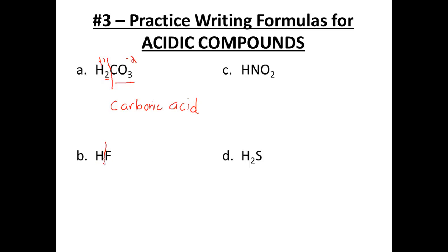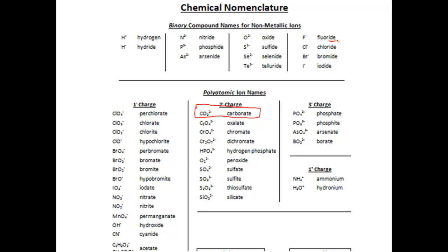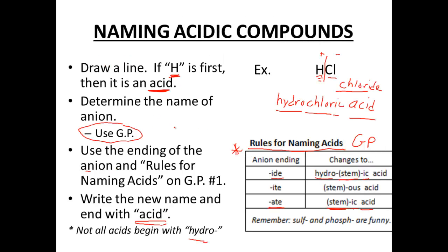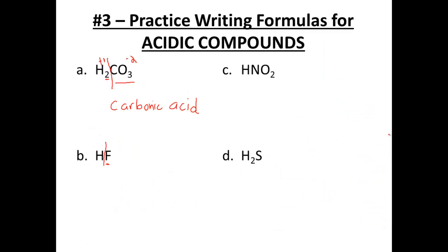For our second practice problem, the formula begins with H, so we automatically know it's an acid. It ends with fluoride. Looking in our gold packet, fluoride ends in -IDE. So fluoride goes to: hydro + stem 'fluor' + -IC + acid — hydrofluoric acid.